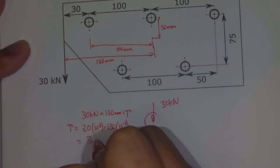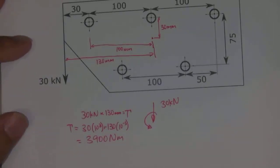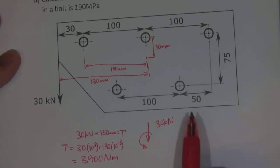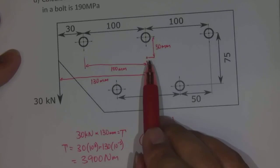So we get 3900 newton meters of torque acting around the centroid of this section here.